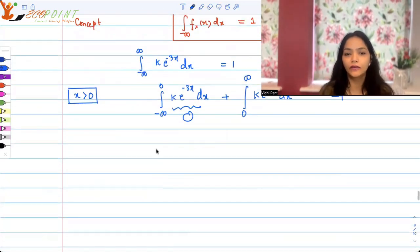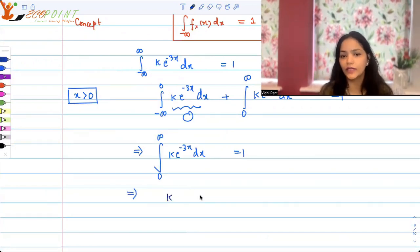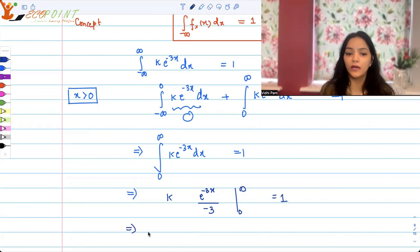Therefore, all we have to do is: 0 to infinity k times e^(-3x) dx should equal 1. It's very simple to integrate an exponential function. Let's keep k outside. It's going to be e^(-3x) and in the denominator the scalar -3, from 0 to infinity should equal 1. Let's put the bounds.